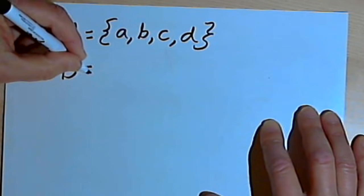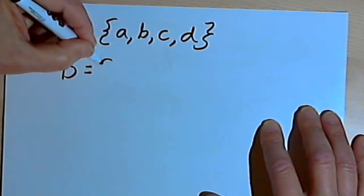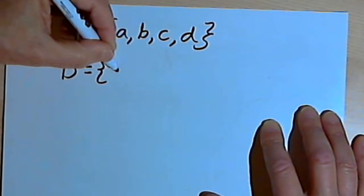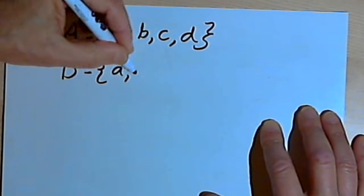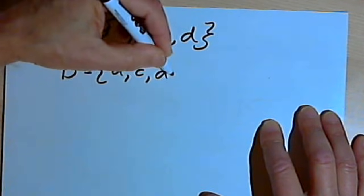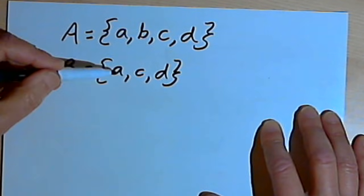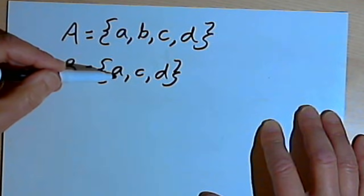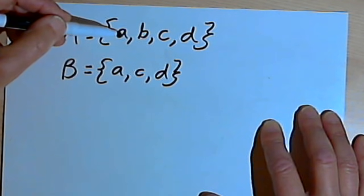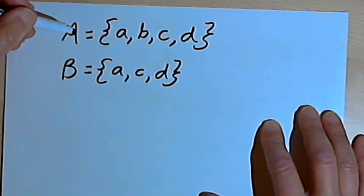I also have set B, and set B contains the elements A, C and D. Since all the elements in B are also found in A, I can say that B is a subset of A.